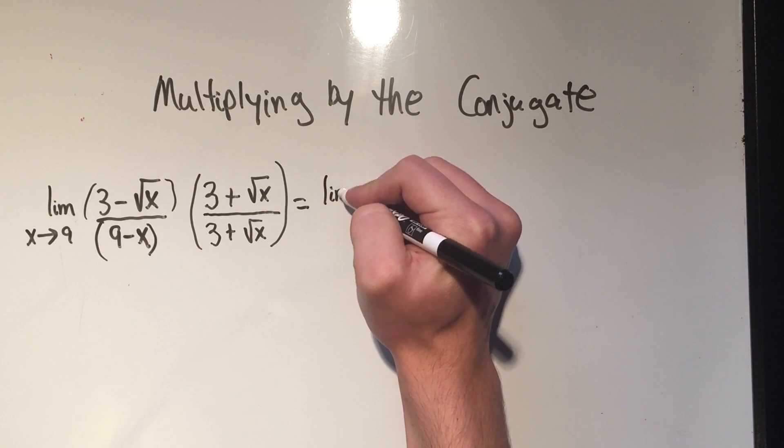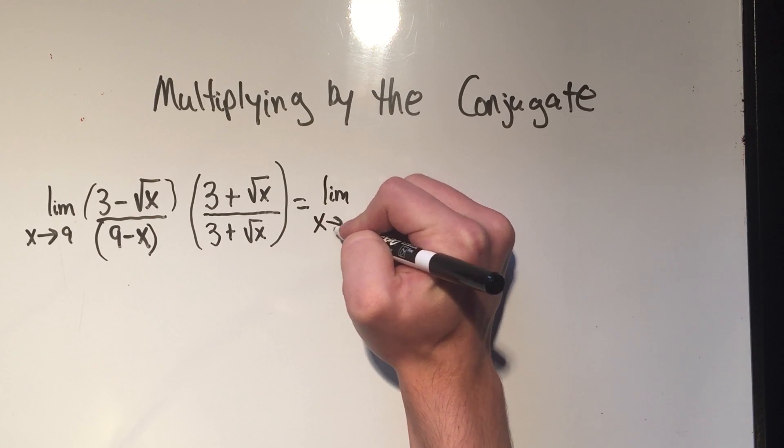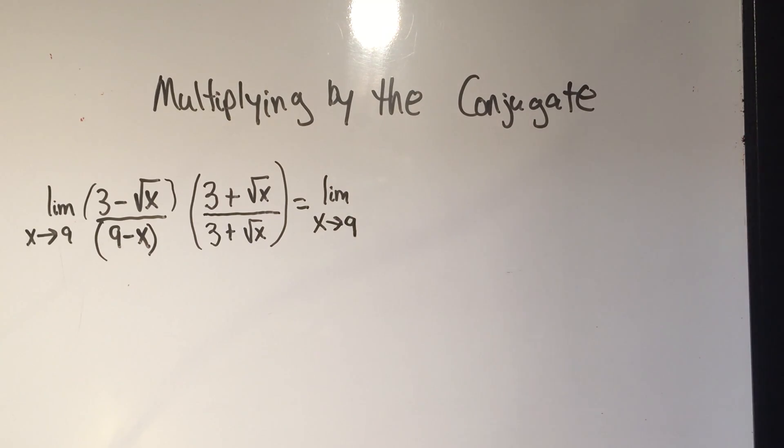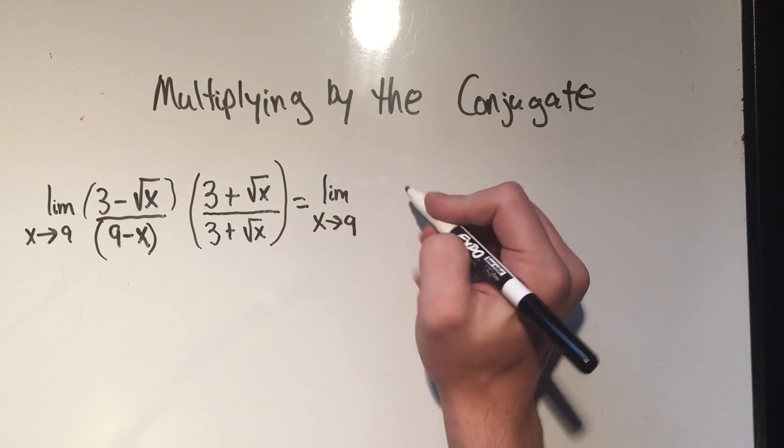So let's see what happens once I do this. You should technically write limit every time until you actually plug in the number. I see a lot of students leave this off and some professors will mark that wrong. So I would recommend writing limit every single step until you plug in that 9.